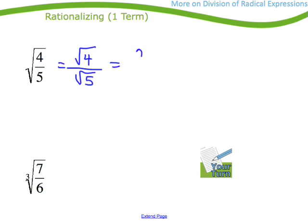If I have a radical expression like this one, I know that I can rewrite that as the square root of 4 over the square root of 5. I know the square root of 4. I guess I could write that as 2 over the square root of 5. But I look at that and I shudder because there's a radical on the bottom.